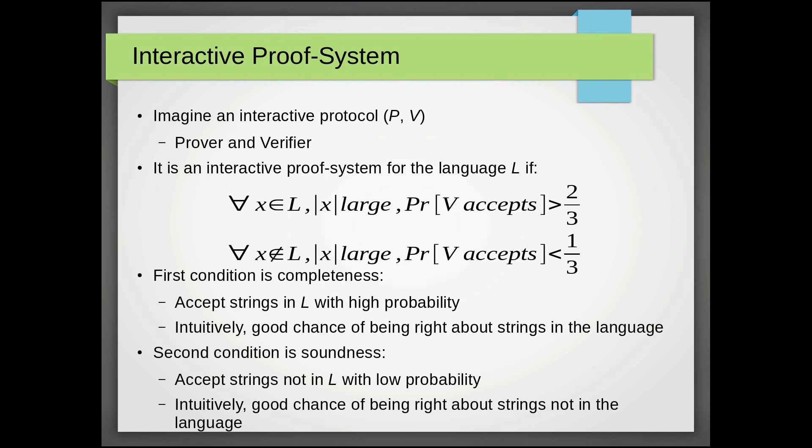So the first condition is the logical idea of completeness. We accept strings in L with high probability. Intuitively, we have a good chance of being right about strings that actually are in the language.